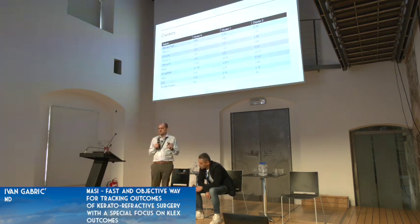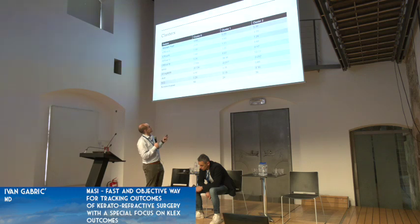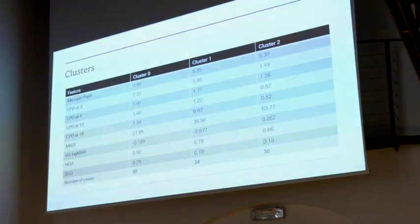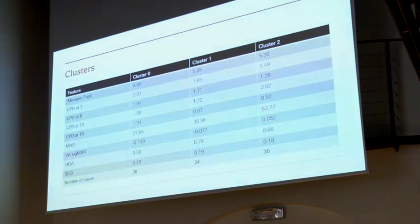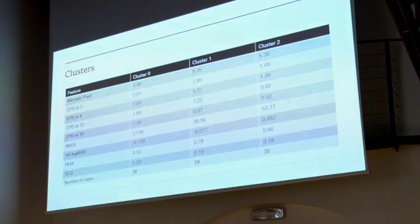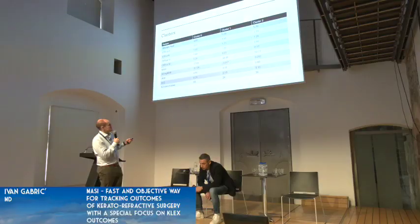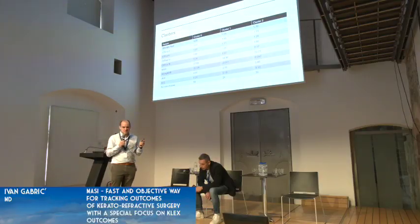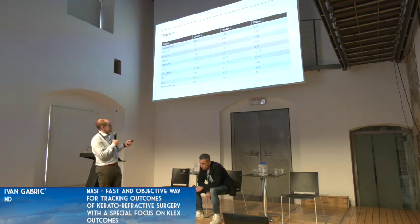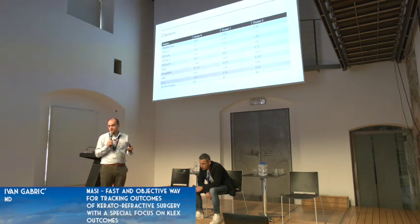We clustered the patients into three groups. Cluster 0: patients with low MASI scores and pretty good contrast sensitivity. Cluster 1: patients with medium MASI numbers and slightly worse contrast sensitivity. Cluster 2: patients with high MASI and very low contrast sensitivity. Looking at mesopic pupil — 4.8, 5.3, 5.3 — that's a clinically insignificant difference. MASI: 27, 38, 53 — that's a big difference. LogMAR: slight difference but not too much. HOA: the group with the worst vision actually has lower total aberrations than the group with better vision, so HOA was not a big predictor.